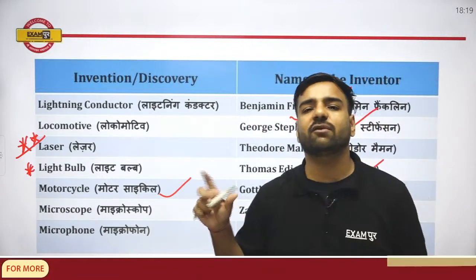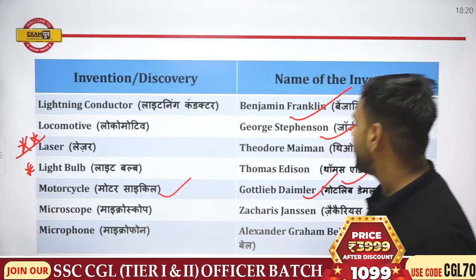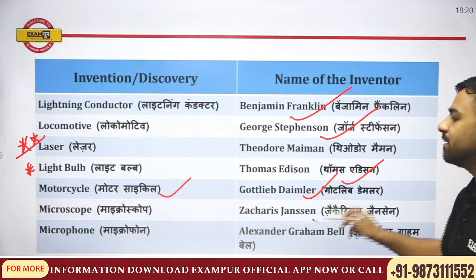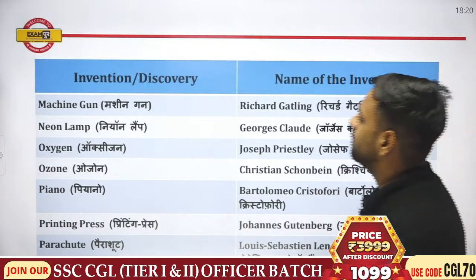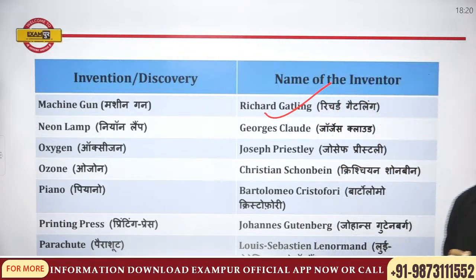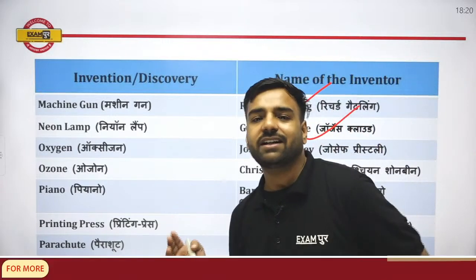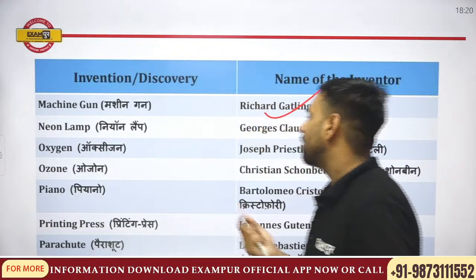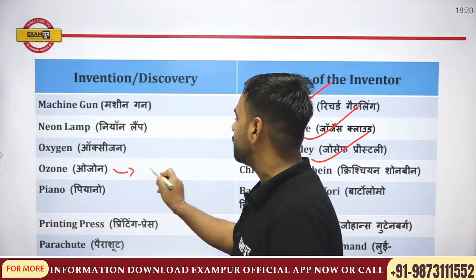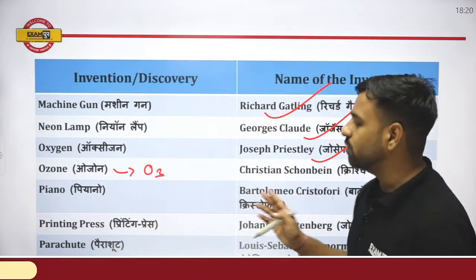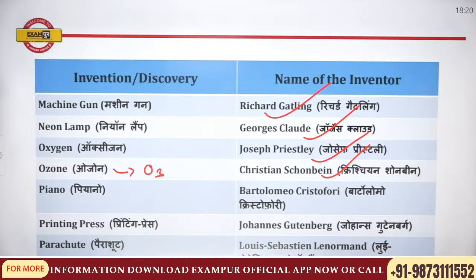Motorcycle was discovered by Gottlieb Daimler. Microscope magnifies to a level where we can see microbes including bacteria; it was discovered by Zacharias Janssen. Microphone was discovered by Alexander Graham Bell. Machine gun was discovered by Richard Gatling. Neon lamp was discovered by Georges Claude.